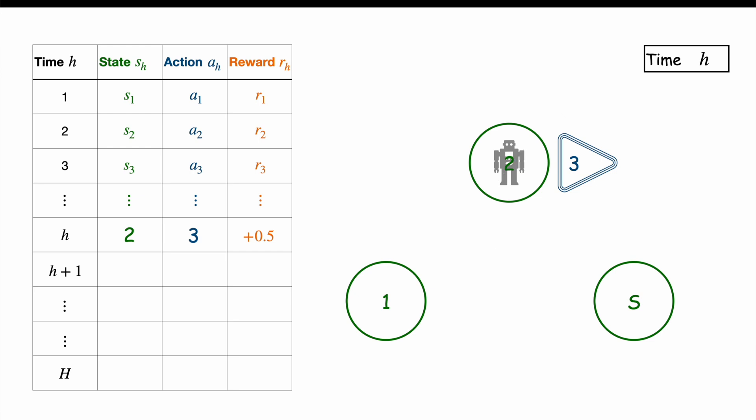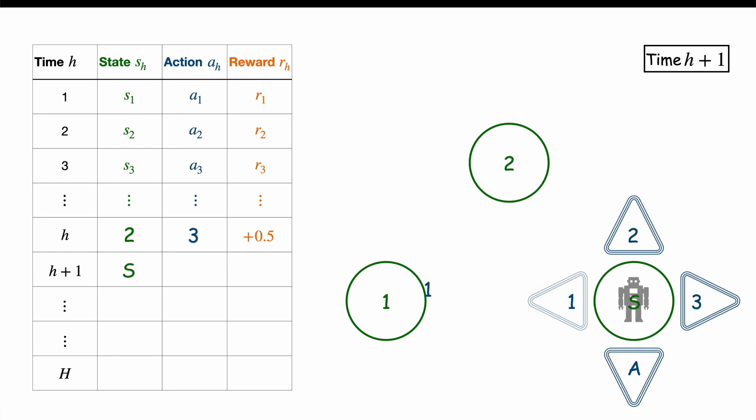In other words, the agent will be at state 1 with probability P that SH plus 1 is equal to 1 given H SH AH, and so on. Then the process restarts from a new state SH plus 1 in the example on the screen that is state S.